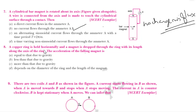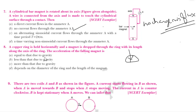Next question: A copper ring is held horizontally and a bar magnet is dropped through the ring with its length along the axis of the ring. The acceleration of the falling magnet is — is it equal to, less than, more than gravity, or depends on diameter?